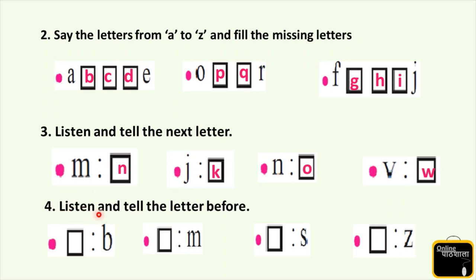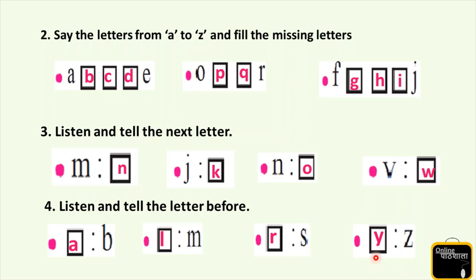Question number 4: listen and tell the letters before. Now kids, you are going to tell me which alphabet will come before this alphabet. Tell me what will come before B? Yes, it's A. Now read: A, B. Kids, tell me what will come before M? It's L. L, M, and then N. What will come before S? It's R. O, P, Q, R, S. Very good. Next, what will come before Z? It's Y. X, Y, Z.